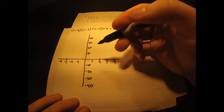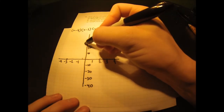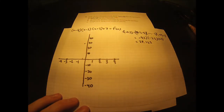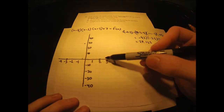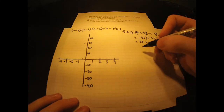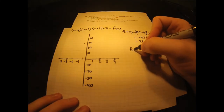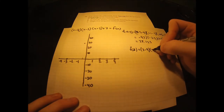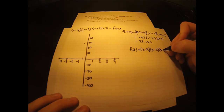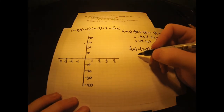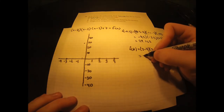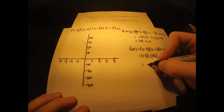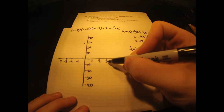That gives us 28.125, so our first turning point is at approximately 28.125, right up near 30 on the graph. Now we solve for the second turning point: f(3) equals 3 minus 4, times 3 minus 2, times 3 plus 3, which gives us negative 1 times 1 times 6, equaling negative 6. So our second turning point is at negative 6.